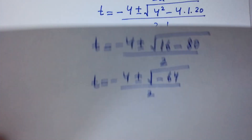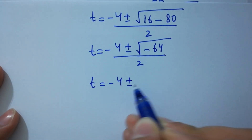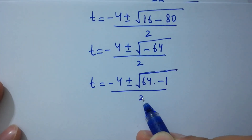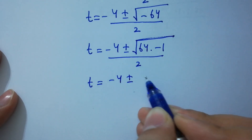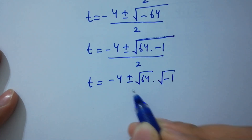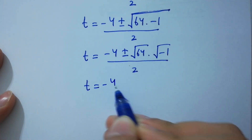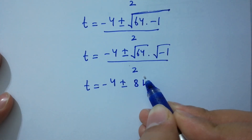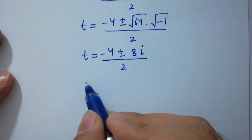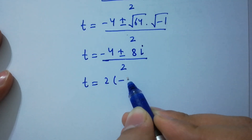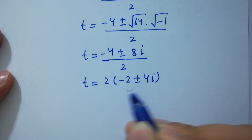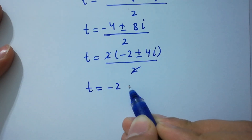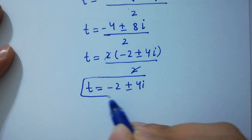So t equals minus 4 plus or minus square root of 64 times minus 1, over 2. This becomes minus 4 plus or minus square root of 64 times square root of minus 1, over 2. Since square root of minus 1 equals i from complex numbers, we get minus 4 plus or minus 8i over 2. Factoring out 2: t equals minus 2 plus or minus 4i, which are our two complex solutions.